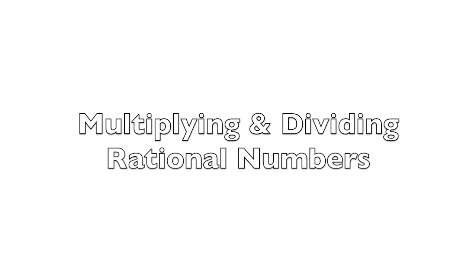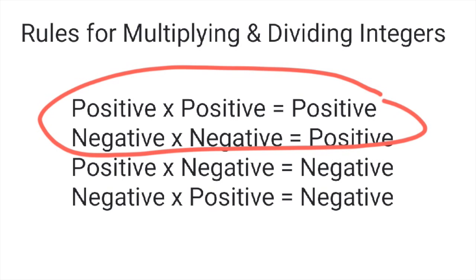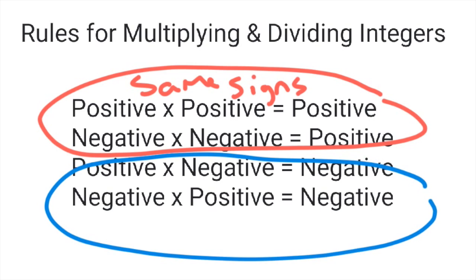Multiplying and dividing rational numbers. The rules for multiplying and dividing rational numbers are the same as multiplying and dividing integers. If the signs are the same, the answer will be positive, and if the signs are different, the answer will be negative.